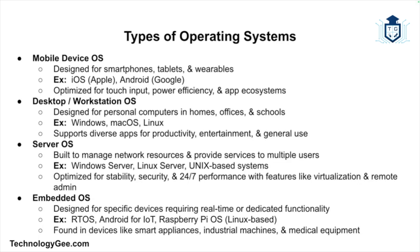Server operating systems are optimized for stability, security, and performance, supporting features like remote administration, virtualization, and advanced networking. Finally, we have embedded operating systems, designed for specific devices or systems that require real-time or dedicated functionality. Examples include RTOS (real-time operating systems), Android for IoT devices, and Linux-based systems like the Raspberry Pi OS. Embedded operating systems are found in devices like smart home appliances, industrial machines, medical equipment, and car infotainment systems. Each type is optimized for its specific environment, ensuring the hardware it runs on is used effectively and securely.